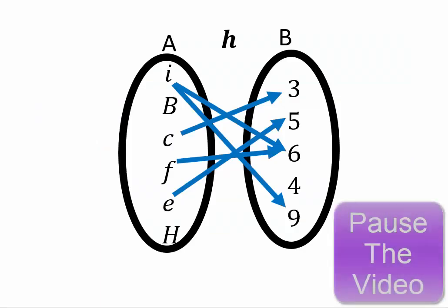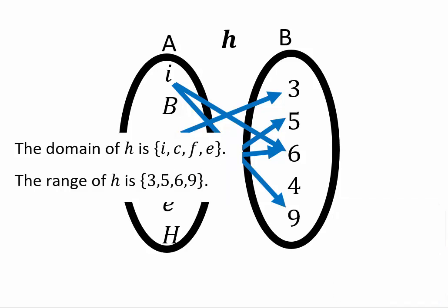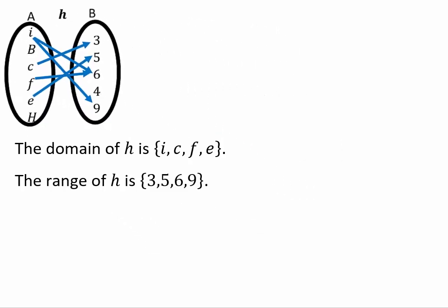Pause the video here, see if you can find the domain and range of this relation and actually just study this relation. Hopefully you got the answer: the domain of h is i, c, f, and e, and the range is 3, 5, 6, and 9.